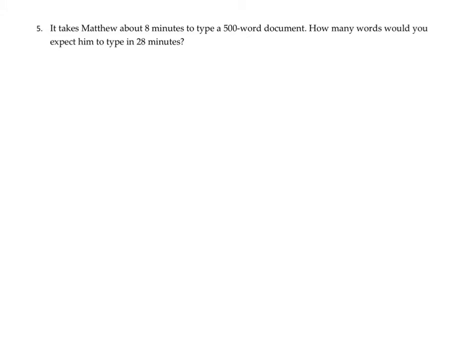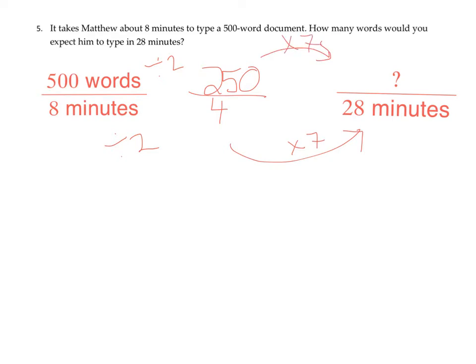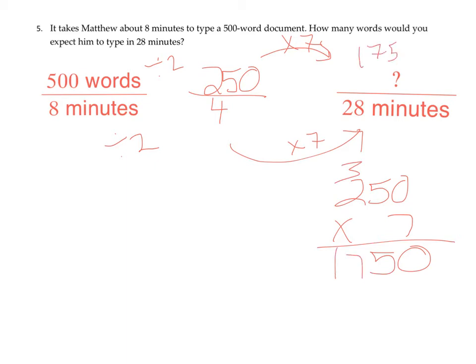Question five. It takes Matthew about 8 minutes to type a 500-word document. How many words would you expect him to type in 28 minutes? Set up the proportion: 500 words over 8 minutes equals unknown over 28 minutes. Dividing by 2 simplifies to 250 words over 4 minutes. Then 4 times 7 is 28, so I do 250 times 7. Working it out: that gives 1,750 words.